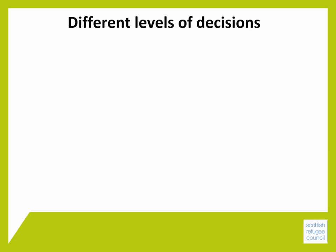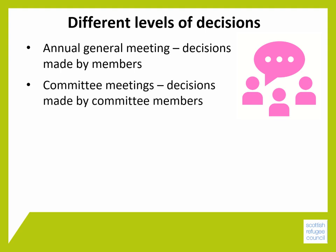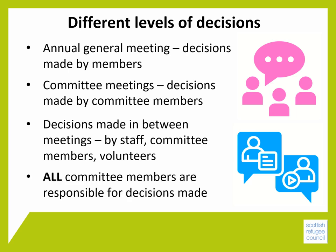There are also different levels of decision. At your annual general meeting, decisions are made by your members — for example, electing your committee. At committee meetings, decisions are made by committee members, and then there are decisions made in between meetings by staff, committee members and volunteers. It's important to remember that all committee members are responsible for decisions made by the organisation.